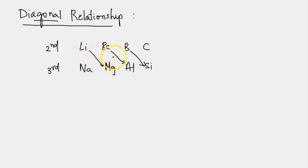These elements which are diagonally placed from second and third period, lasting up to fourth group, show diagonal relationship. That means these pairs of elements will show certain similarity in their behavior which deviates from the behavior of the rest of the members.